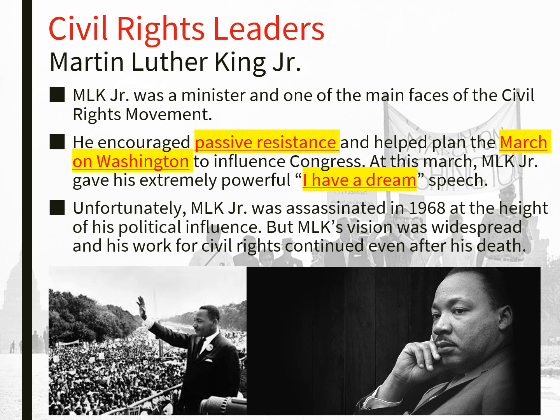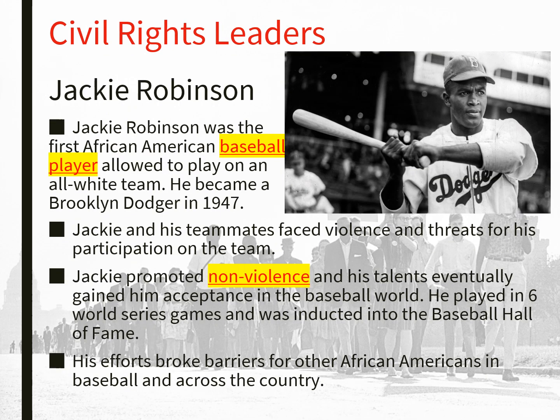Another very famous person in the civil rights movement is Jackie Robinson — one of my favorite figures. Jackie Robinson was the first Black American baseball player allowed to play on an all-white team, the Brooklyn Dodgers, in 1947. Jackie and his teammates faced violence and threats for his participation. They weren't allowed to stay in certain hotels or eat at certain restaurants when they traveled. Jackie promoted non-violence, and his talents eventually gained him acceptance. He played in six World Series games and was inducted into the Baseball Hall of Fame. His efforts broke barriers for other Black Americans in baseball and across the country.